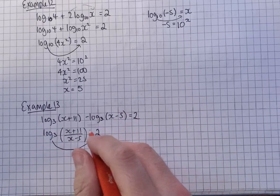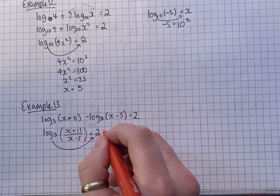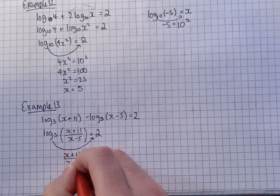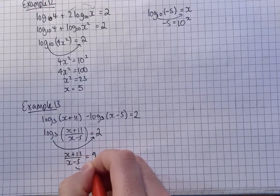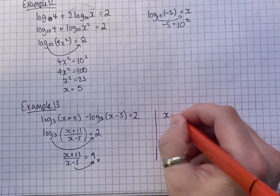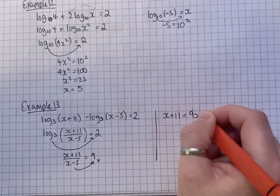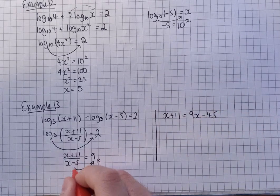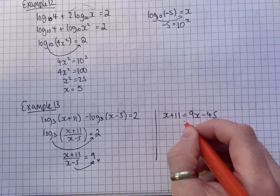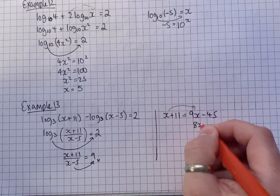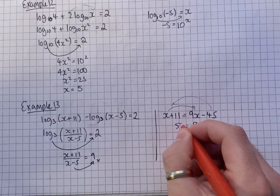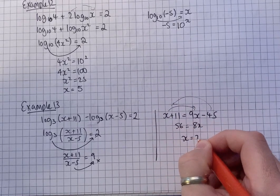So this can come across as a multiply. So we get x plus 11 equals 9x take away 45. Just bring that across as a times. Bringing the x over, we get 8x. Minus 45 over, we get 56. X equals 7.